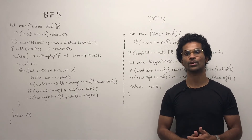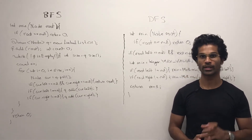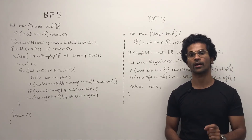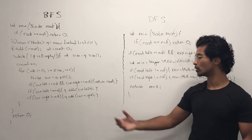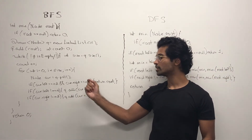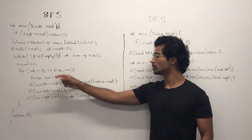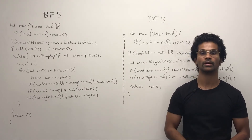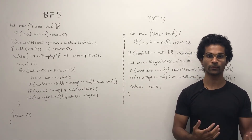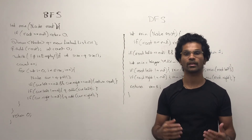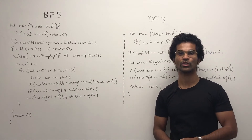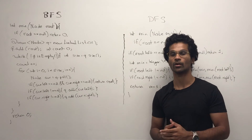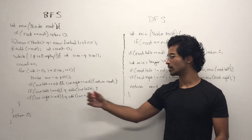For the BFS code, first we initialize a queue and load the root node into it. We also initialize a count variable to keep track of how many layers we've crossed. We do a regular BFS, and every time we encounter a new layer — which is the for loop — we increment the count. At each layer, we pull from the queue. If the node we pulled is a leaf node, we immediately return the count. Otherwise, like a regular BFS, we add the left child if not null and the right child if not null. If we can't find anything, we return 0.